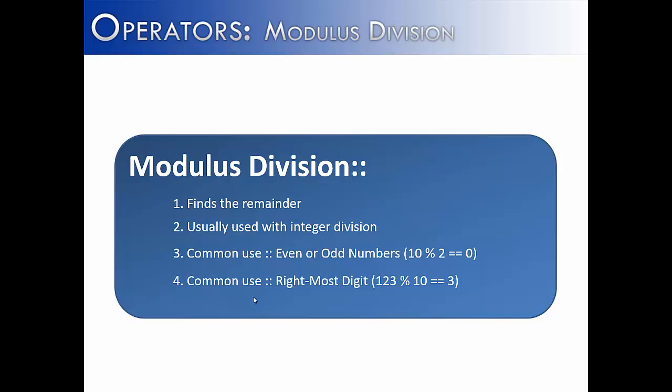Another common use is to find the rightmost digit. So if we take a number like 123 modulously divided by 10, we're going to get 3, or the rightmost digit.